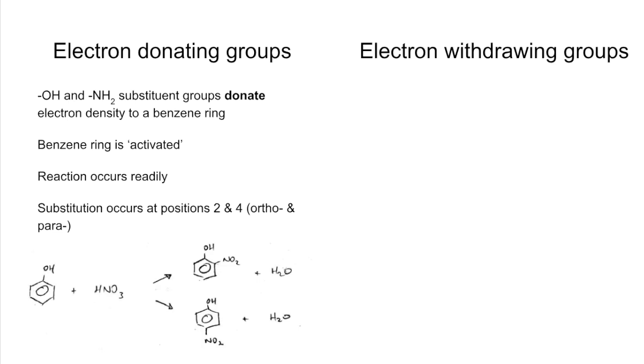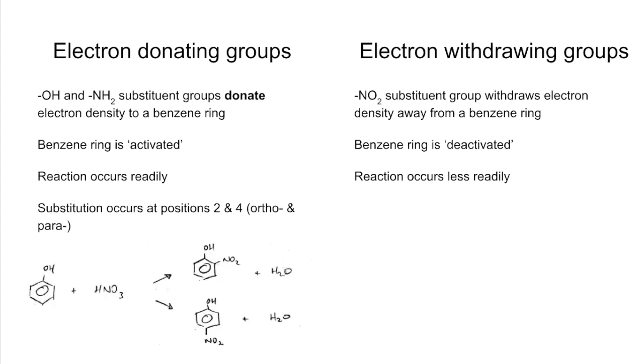Looking at the electron withdrawing groups now, there's only one specified by the syllabus. The NO2 substituent group withdraws electron density, taking it away from a benzene ring. We say that the benzene ring is deactivated and that's going to make benzene less reactive. The reaction is going to occur less readily.